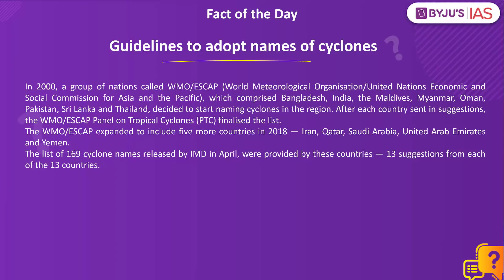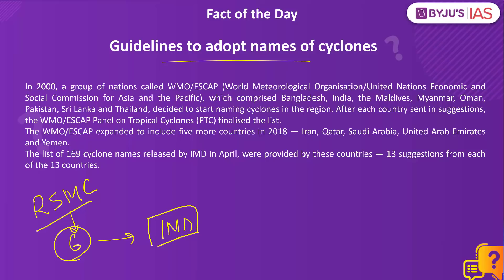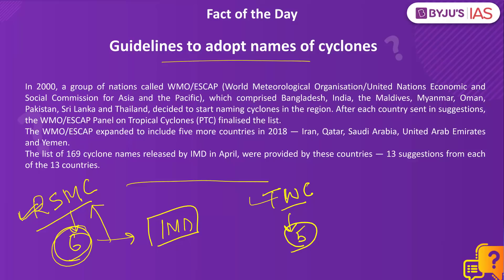Now let's look at the fact of the day — guidelines to adopt names of cyclones. Cyclones that form in every ocean basin across the world are named by regional specialized meteorological centers. There are six such centers in the world, one of which is the IMD, Indian Meteorological Department. There are also five tropical warning centers in the world.